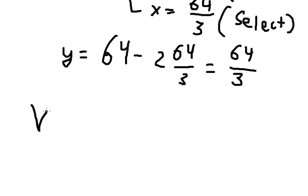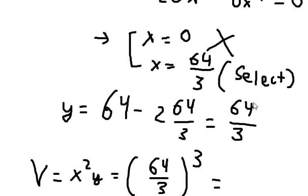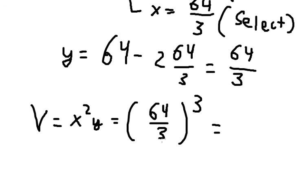So the volume, we can put x squared times y. Because x and y have the same value, that's why we have 64 over 3 to the power of 3. And this gives us 9,709 cubic inches.